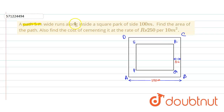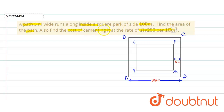In the given question, a path 5 meters wide runs along the inside of a square park of side 100 meters. We have to find the area of the path and also the cost of cementing it at the rate of rupees 250 per 100 meter square. Here, ABCD is the square park.